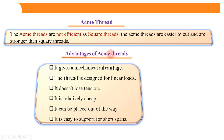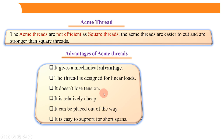What are the advantages of Acme threads? Acme threads give a mechanical advantage. The thread is designed for linear loads. It doesn't lose tension. It is relatively cheap. It can be placed out of the way. It is easy to support for short spans, and one of the biggest advantages is that it is stronger than square threads.